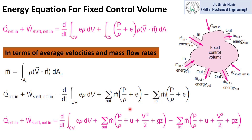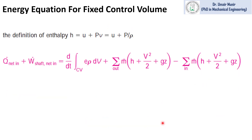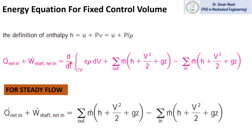We know that e equals U (internal energy) plus V²/2 (kinetic energy) plus gz (potential energy). We can also write the energy equation in terms of enthalpy, using the definition that enthalpy equals U plus p/rho. For steady flows, the time derivative term is zero because properties of the control volume do not change with respect to time, so that term is eliminated when solving a steady flow problem.